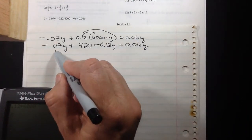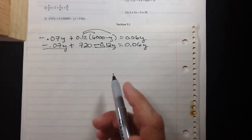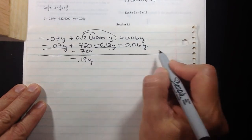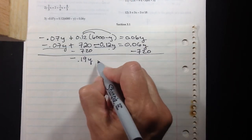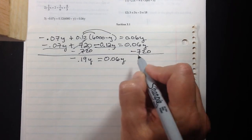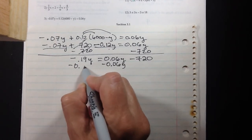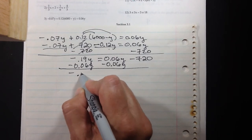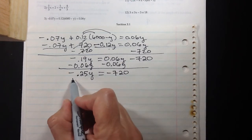Positive times negative here is negative 0.12y. Still we have simplifying we can do on the left side, so just combine negative 0.07 and negative 0.12—feel free to use your calculators if you want—negative 0.19y. I'm going to go ahead and subtract 720 from both sides. We have negative 0.19y equals 0.06y, so total that's negative 0.25y equals negative 720.